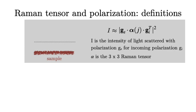So imagine that you have a sample here and then you are shining light on the sample. So you have light with a wave vector Ki — I is for incoming. And of course, it has a polarization which is orthogonal to the direction, to the wave vector. So the polarization of the incoming light is Ei. There's some scattering, something happens on the sample and the light is reflected back. And then we are looking at the specific reflection along Ks, which is the wave vector of the scattered light with a polarization Gs.